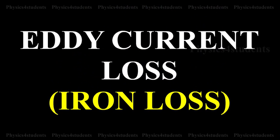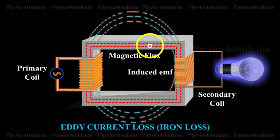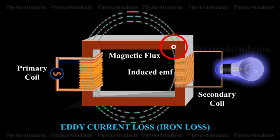Eddy Current Loss (Iron Loss): The varying magnetic flux produces eddy currents in the core. This leads to the wastage of energy in the form of heat. This loss is minimized by using a laminated core made of steloid, an alloy of steel.